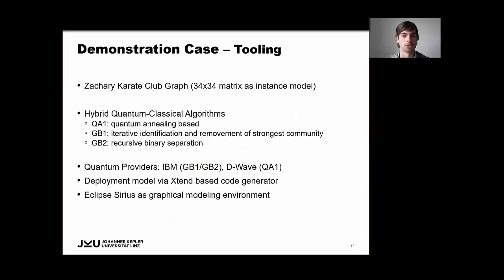Okay, so in order to demonstrate the feasibility of our approach, we have applied it to the Zachary Karate graph, which is a prominent benchmark graph in social network analysis. And in our case, the graph is represented as a binary symmetric 34 times 34 adjacency matrix. So in our case, there are 34 people in the network, and a matrix element just indicates whether there is a connection between two people or not.